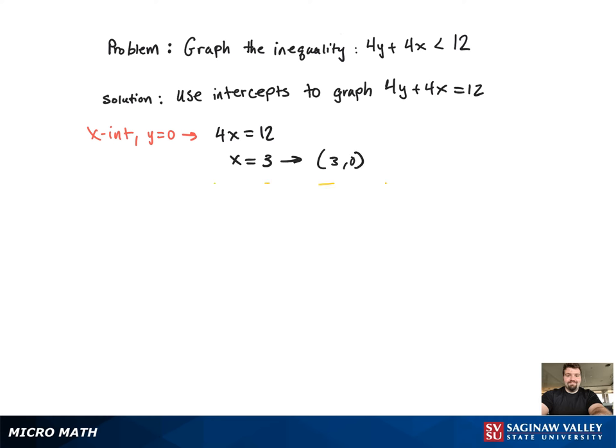Now we need to find the y-intercept. Plug in 0 for x, and we get 4y equal to 12. Now y equals 3. And that corresponds to the point 0 comma 3.